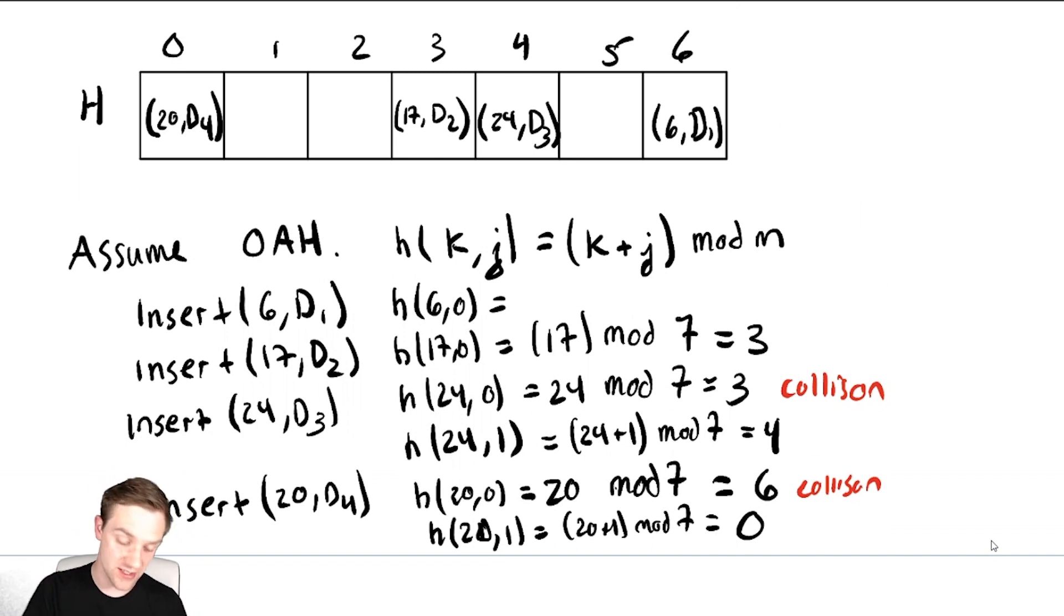And that is how you will use open address hashing. Anytime you get a collision, you must increase the second argument of the hash function, and then you see if there is an open location. So if I was to get a collision at this location, I would need to up j and then we get a collision here, and then I would insert the element over there. So that is how open address hashing works.